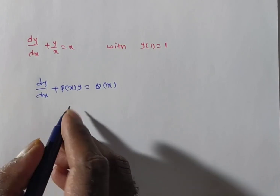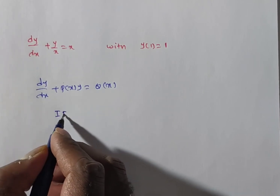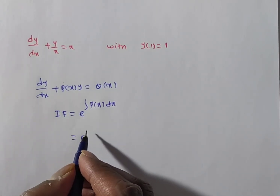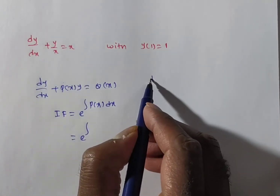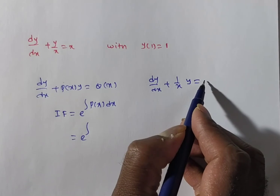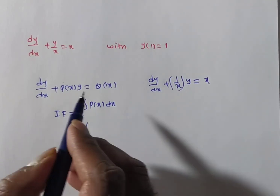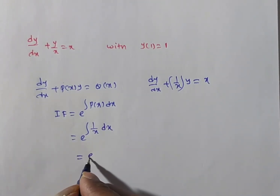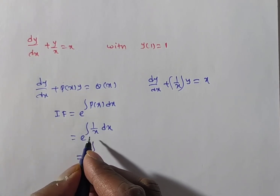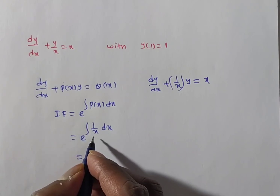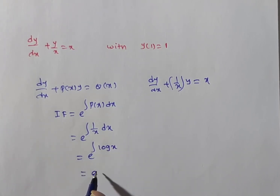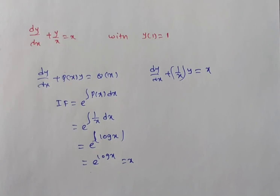Since this is a non-exact linear differential equation, we find the integrating factor. The integrating factor is e^(∫P(x)dx). Here P(x) is the coefficient of y, which is 1/x. So the integrating factor is e^(∫(1/x)dx). Since the integrand is 1/x, the integral is log(x). Therefore the integrating factor = e^(log x) = x, since e and log cancel.